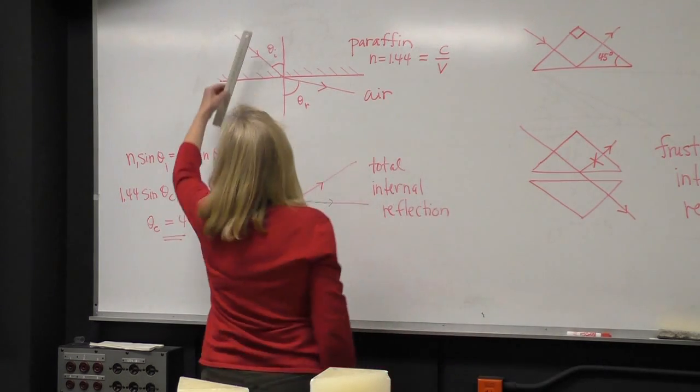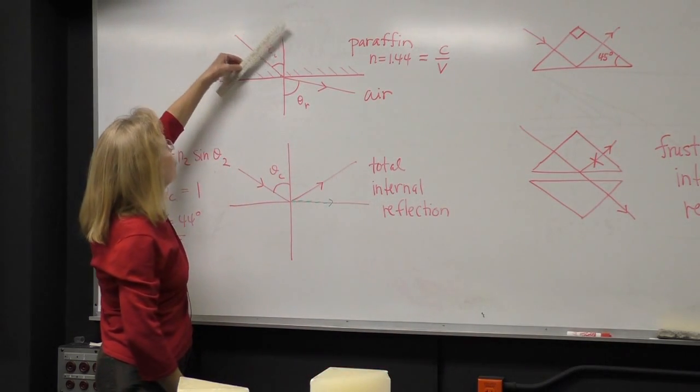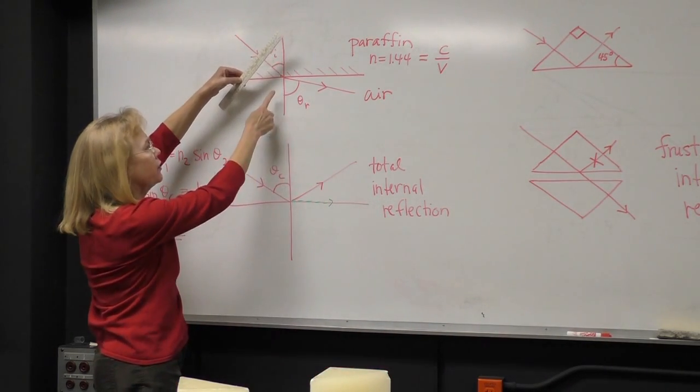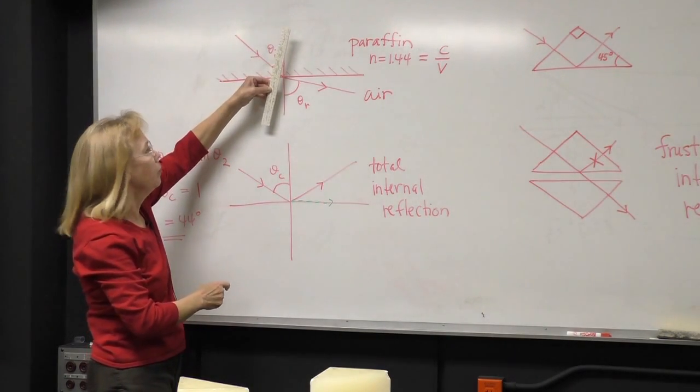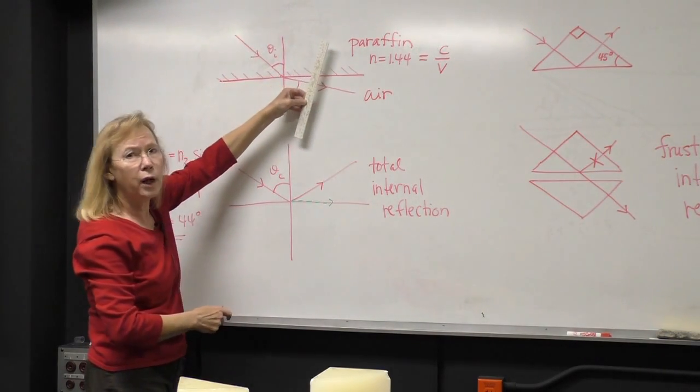So if I have a wave front traveling in and hitting this interface, and it travels faster in the second medium, it's going to refract away from the normal.